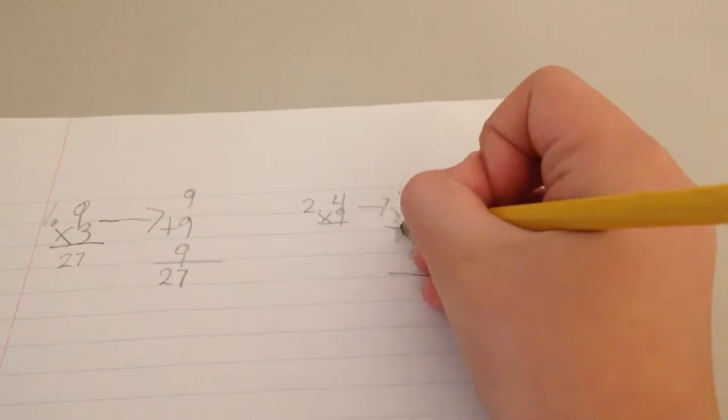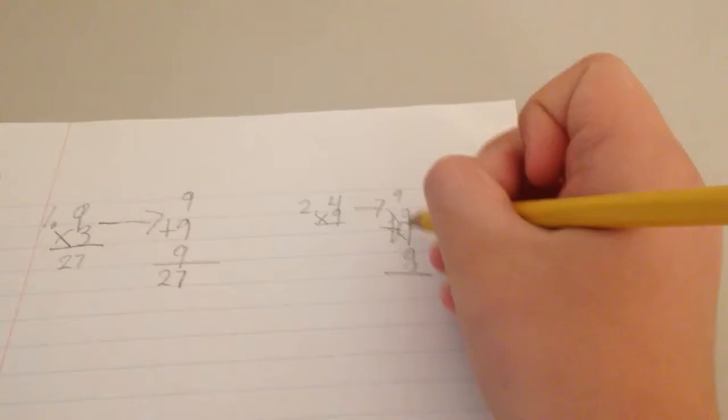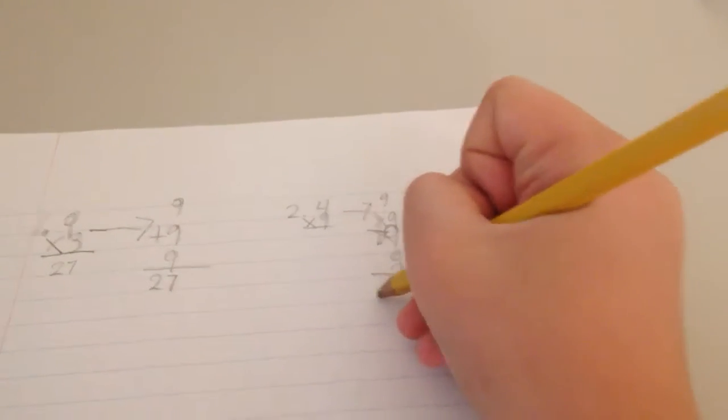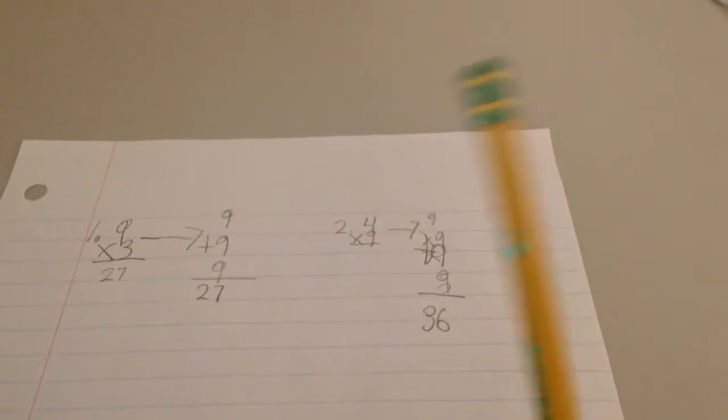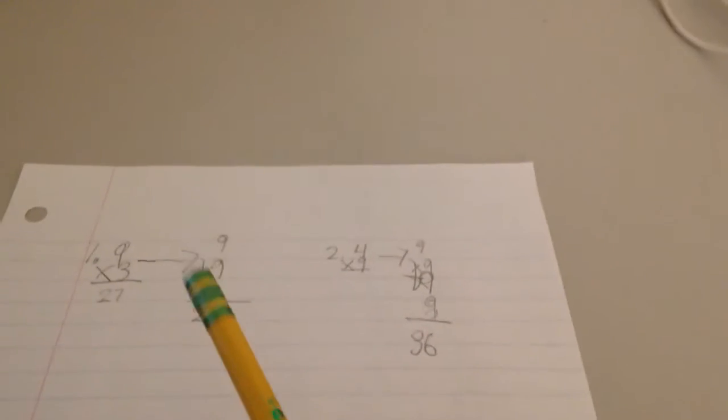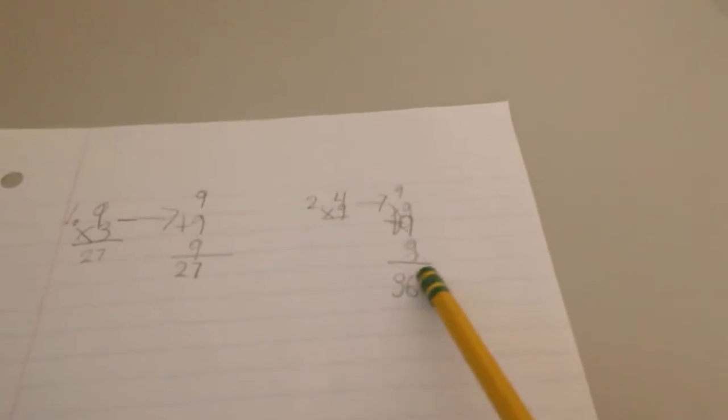Add them all up together. 9, 18, wait, 9, 18, 27, 36. If you're wondering how am I counting so fast, I've had a long experience on addition. So yeah. And that would all equal 36.